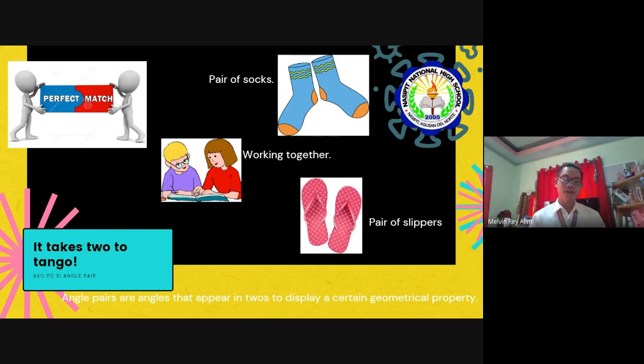Before we'll proceed, let us review first the definition of angle pairs. Angle pairs are angles that appear in tubes to display a certain geometrical property.